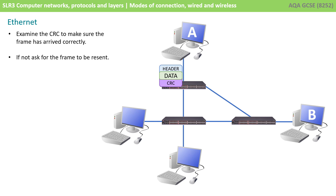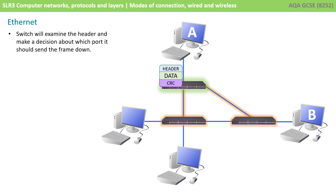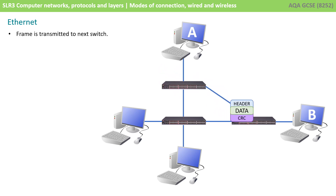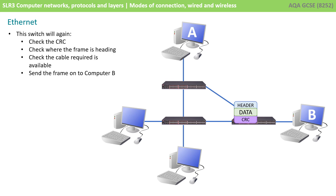The switch first examines the CRC to check that the frame arrived intact; if not, it would request retransmission. Assuming the CRC check is successful, the switch examines the destination address in the header and decides which port to send the frame down. Before transmitting, the switch checks there's no communication on the cable, then sends the frame to the next switch. That switch also checks the CRC, confirms successful transmission, and examines the destination MAC address. Realising it's for computer B, it sends the frame down the cable — checking there's no existing transmission — and the frame is sent to computer B, where it can be unpackaged.